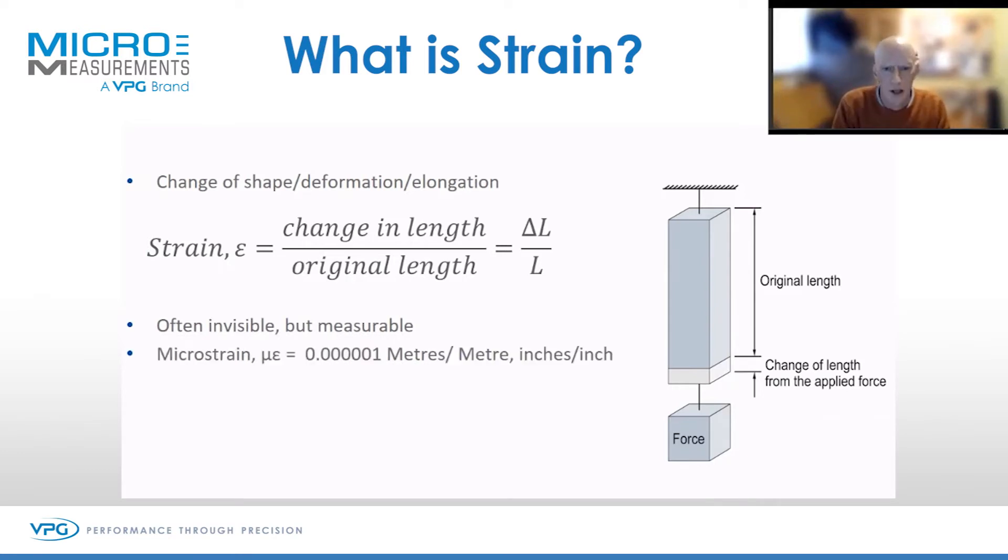We can literally measure the invisible. One microstrain is 0.000001 units per unit, whether that's meters per meter or inches per inch.